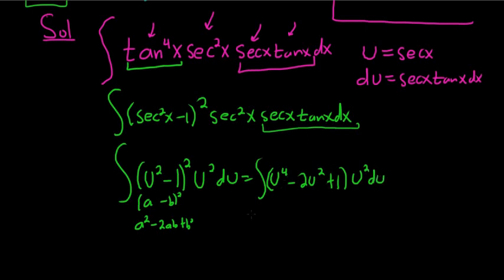Now we just have to distribute the u squared. Distributing the u squared, we get u squared times u to the fourth, which is u to the sixth. u squared times this is minus 2u to the fourth. And then u squared times 1 is plus u squared. And all of this is in parentheses. And we have our du.